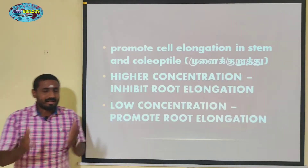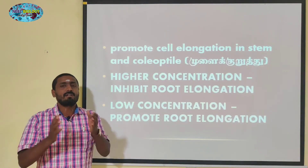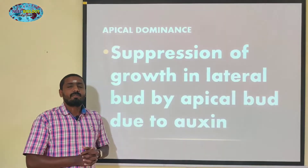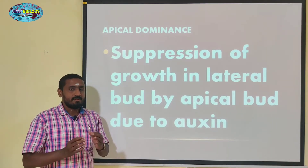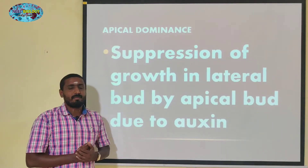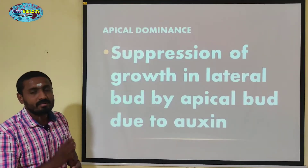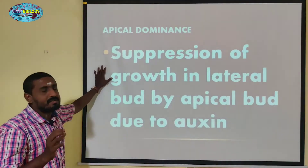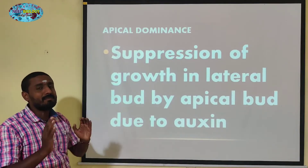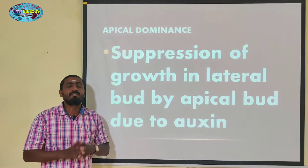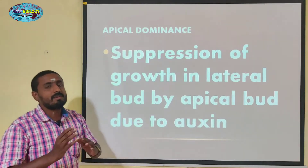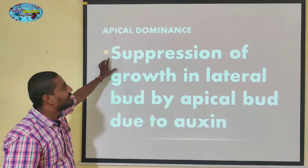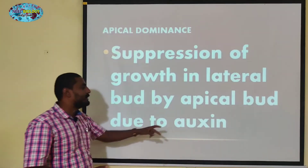If you apply a higher concentration, the root system growth will be inhibited. The root growth level will be lower. Suppression of growth in lateral bud by apical bud is due to auxin.